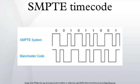Timecodes are added to film, video, or audio material, and have also been adapted to synchronize music. They provide a time reference for editing, synchronization, and identification. Timecode is a form of media metadata. The invention of timecode made modern videotape editing possible, and led eventually to the creation of non-linear editing systems.